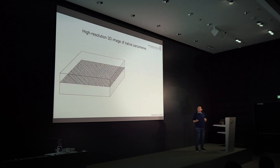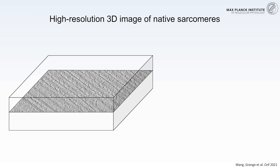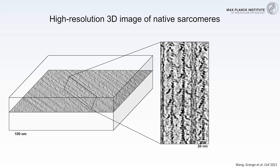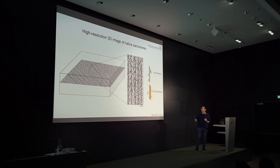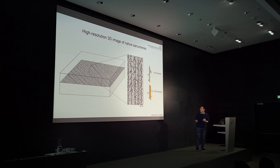With this approach, we now have a three-dimensional image of the sarcomere. What is very cool about this technique is the very high contrast of the image. In the raw image, you can appreciate that there are two types of filaments — the thin filament and the thick filament next to it. On the thin filaments, you can see densities bound to the actin filament, which are the myosin heads. On the thick filament, you can see where the myosin tail originates from.